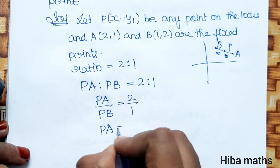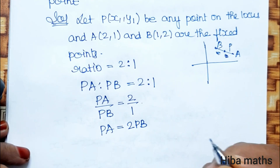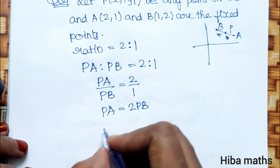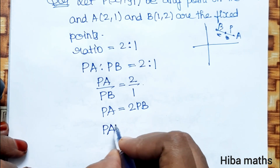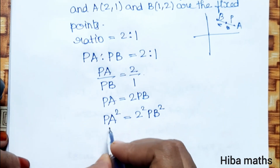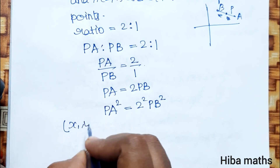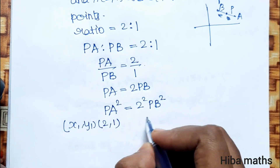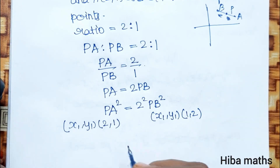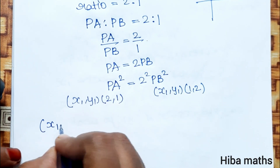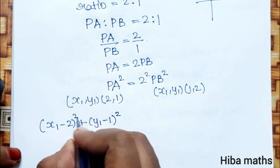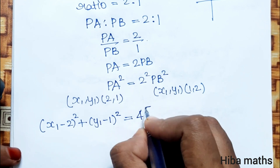PA is equal to 2 times PB. Squaring on both sides, PA squared is equal to 4 times PB squared. The PA points are (x1, y1) and (2,1). The PB points are (x1, y1) and (1,2). So the distance formula gives: (x1 minus 2) squared plus (y1 minus 1) squared is equal to 4 times the PB expression.